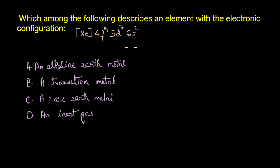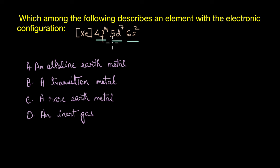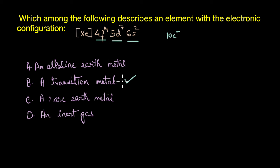The electronic configuration tells us how electrons are distributed among atomic orbitals. This element is positioned after xenon, has completely filled 4f orbitals, 7 electrons in the 5d orbitals, and completely filled 6s orbitals. The 5d orbital is incompletely filled — it has only 7 electrons, less than the maximum of 10 — so this element is a transition metal belonging to the d-block.